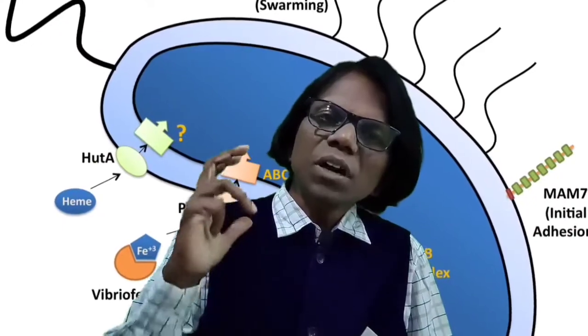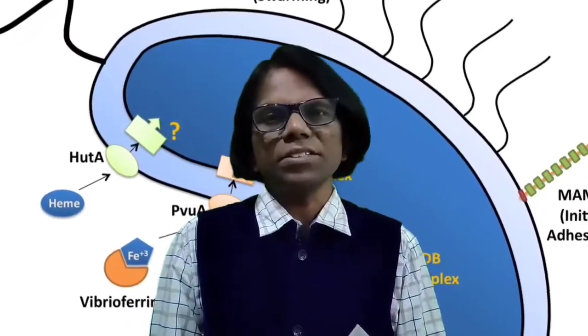Vibrio parahaemolyticus, like many other gram-negative bacteria, grow in the presence of bile salts. They are gram-negative, curved, rod-shaped, facultatively anaerobic bacteria.